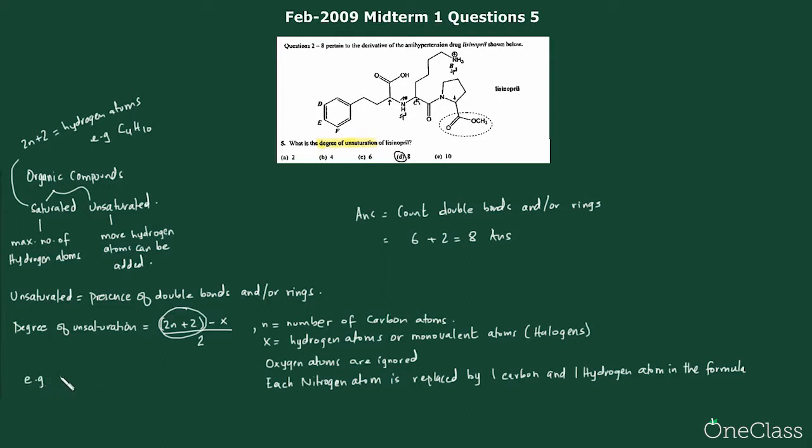So let's do a degree of unsaturation for butene. And we would see that 2 times 4 plus 2, because n is the number of carbon atoms, and we have a bigger parenthesis, minus how many hydrogens are given in the question, divided by 2. And once we do that, we see that 10 minus 8 is 2, divided by 2 is 1. So it would be 1 degree of unsaturation because it has one double bond.